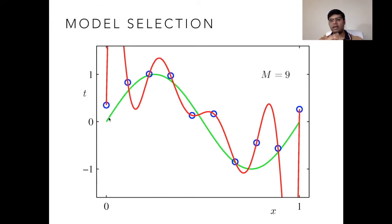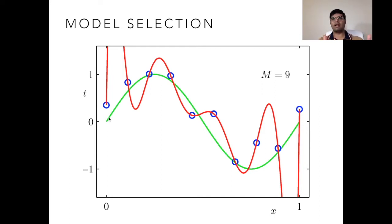To avoid overfitting, we split our training set into training and validation sets. The validation set consists of some points from the training set kept aside to evaluate the model's performance. Once the model performs best on the validation set, we select that as a good model fit for the training data.